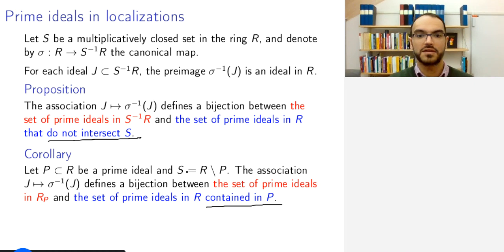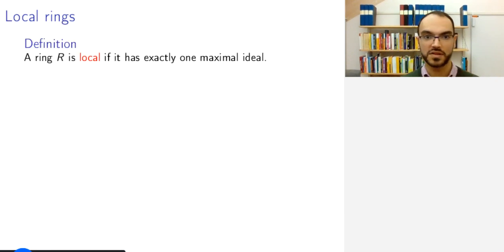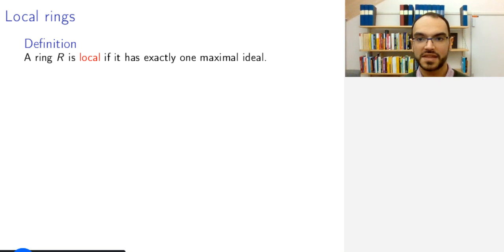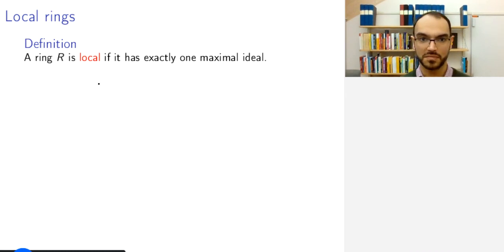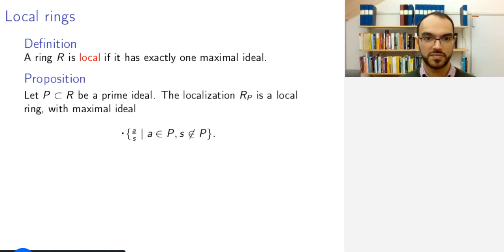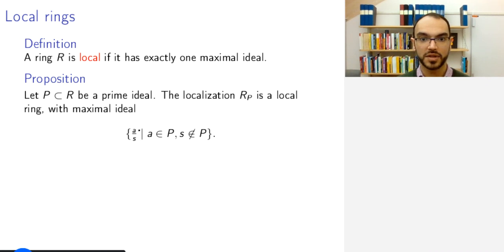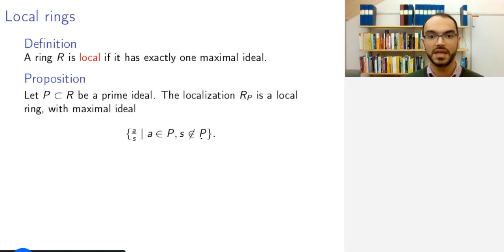This brings us to an interesting property of localizations with respect to prime ideals: these will be local rings. A unital commutative ring is called local if it has exactly one maximal ideal. This might seem unnatural, but geometric examples will motivate this definition later on. The proposition is that if you localize with respect to a prime ideal P, then the localization is a local ring, and the unique maximal ideal is the set of quotients A divided by S where A is in P and S is not in P.